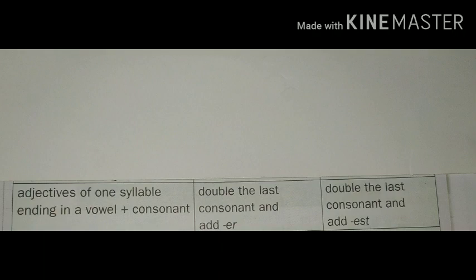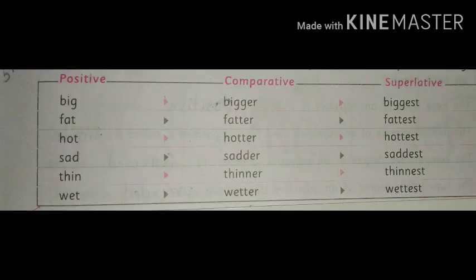The fourth rule is: if you see a word that has a vowel followed by a consonant in its last two places, then the last consonant of the word should be doubled and ER should be added for the comparative degree. Similarly, the last consonant should be doubled and EST should be added for the superlative degree. Here are some examples.